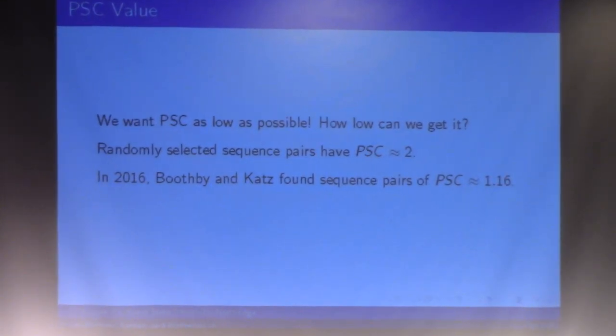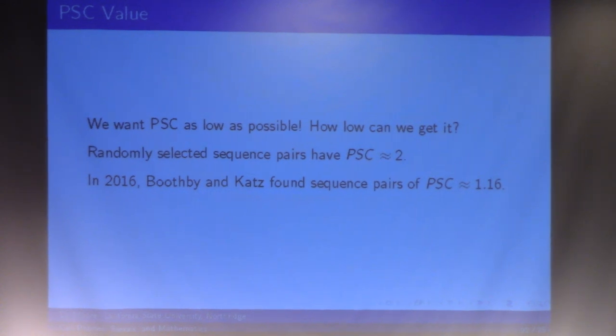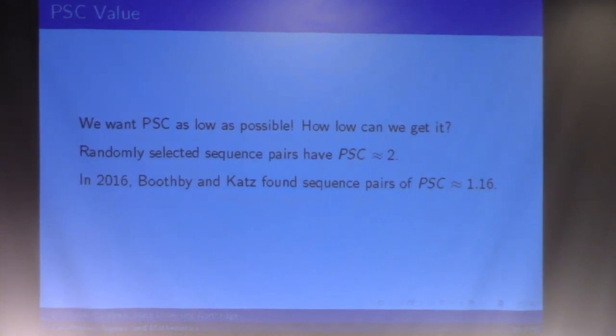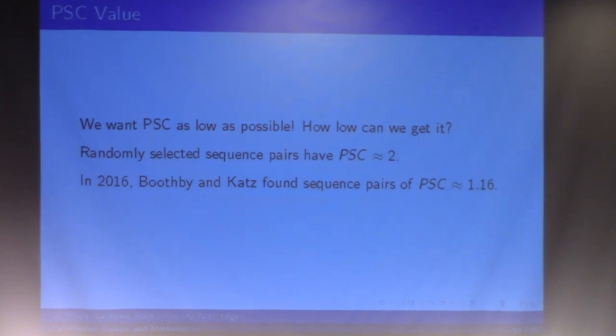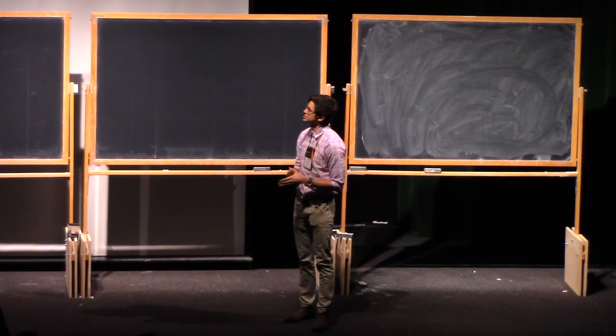We want it as low as possible, and we don't really know how low we can get it. I mean, if we take some randomly selected sequence pairs of various lengths, we see that they have a PSC of about two, so that's not too good. We know it can go lower. And in 2016, Boothby and Katz found a sequence pair of multiple sequence pairs of PSC of about 1.16.